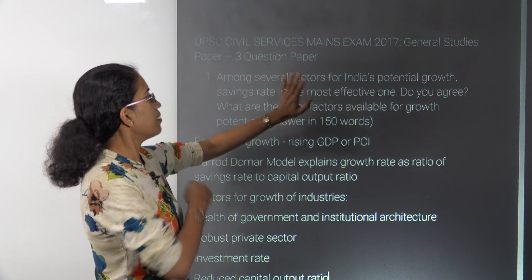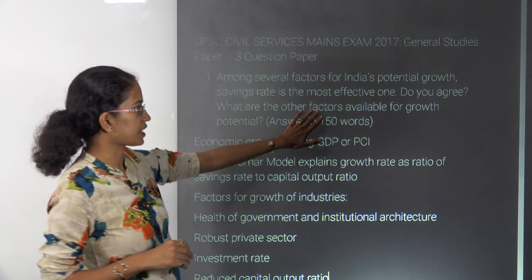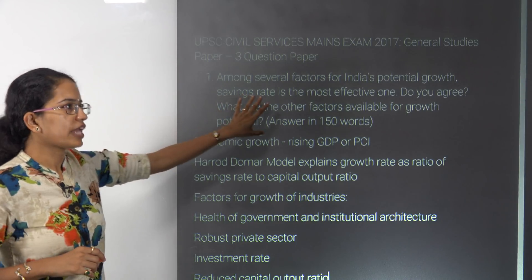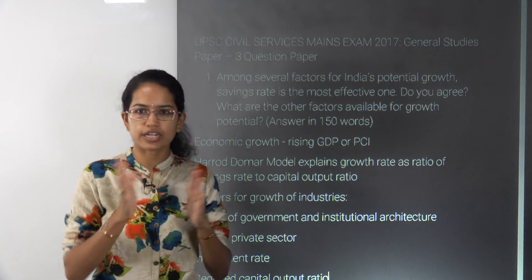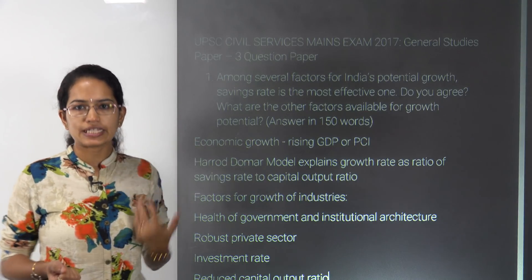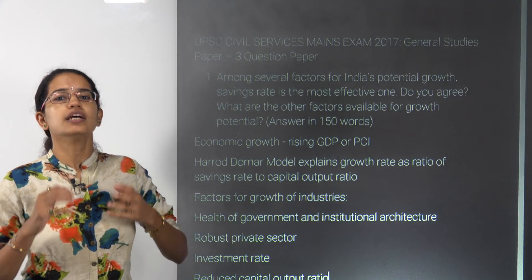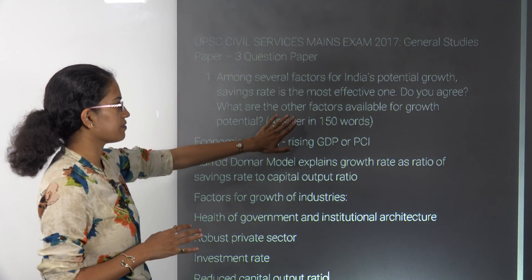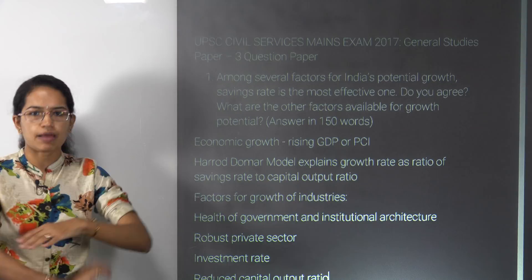The first question asks: among the several factors for India's potential growth, is the saving rate the most effective one? We need to explain economic growth, summarize the difference between growth and development. Under growth, we talk about the rise in GDP and per capita income. We can briefly explain the Harrod-Domer model, where the growth rate is measured as the ratio of savings to the capital output ratio.